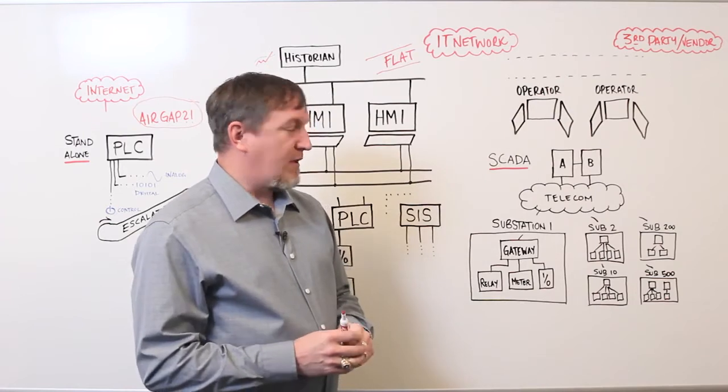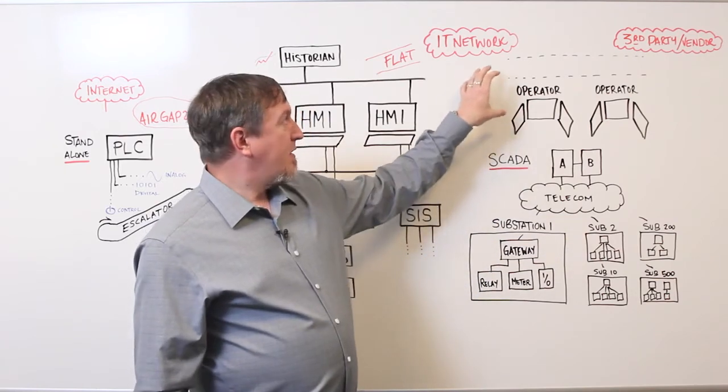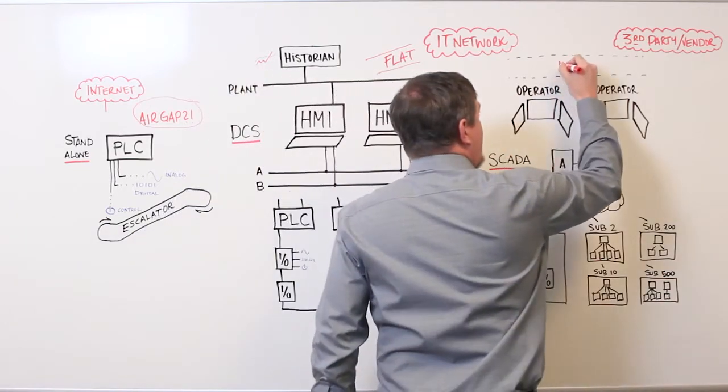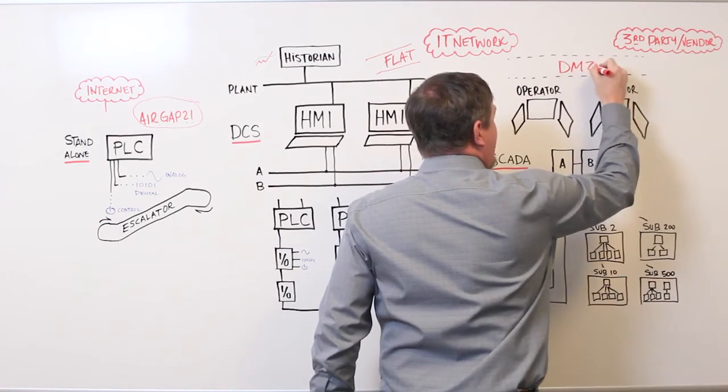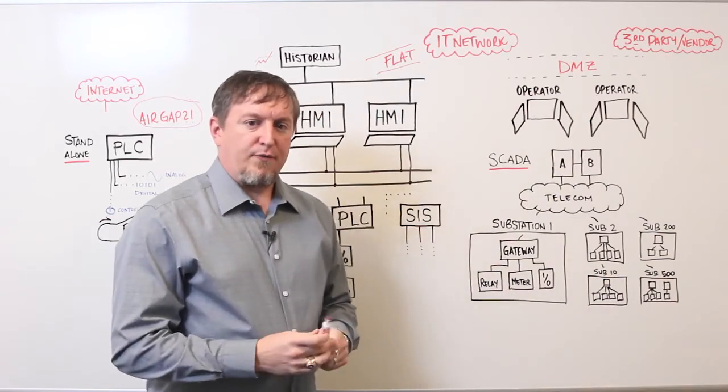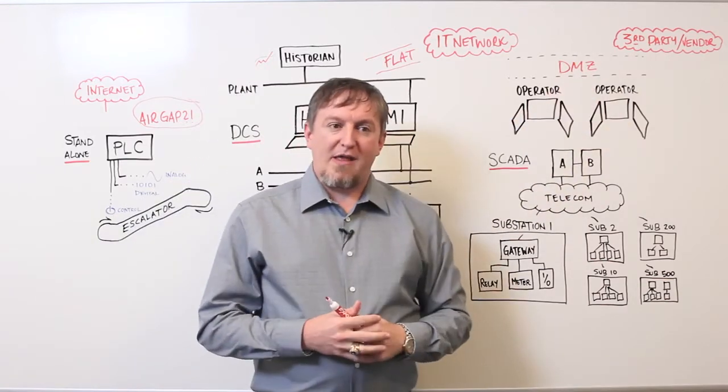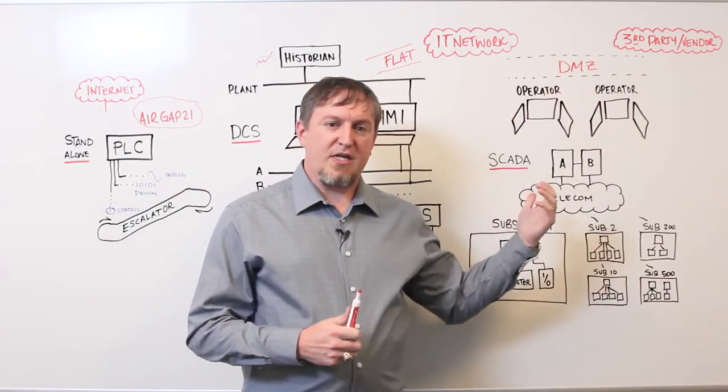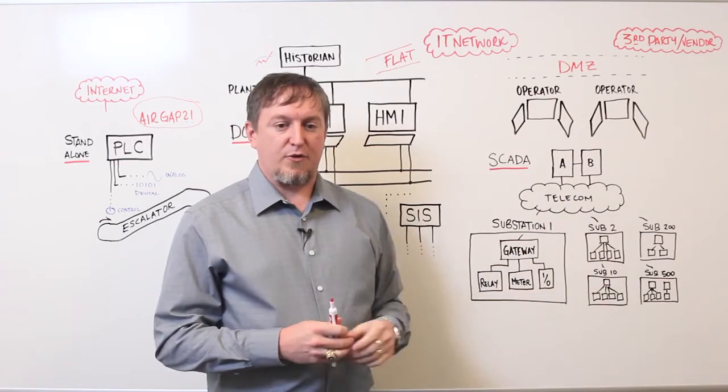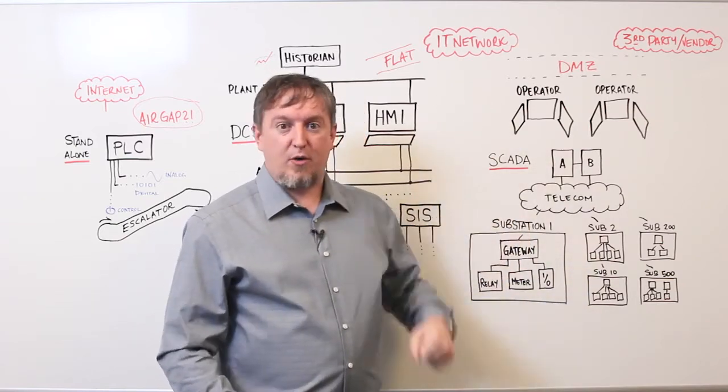We talked about another type of architecture reference model called the Purdue model. In between the IT network and the SCADA network, we have a DMZ, which stands for demilitarized zone. That is a safe area where, if someone wants to get data in or out of the control system, they have to go through the DMZ. Even if you have a third party or vendor having remote connectivity to your control system, they have to get it from the DMZ and not from the control system itself. So, there's no direct connection to the control system from the third party or the internet.